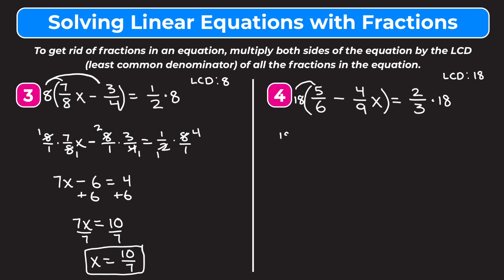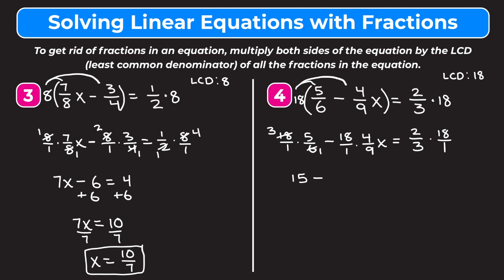On the left we're going to distribute: 18 over 1 times 5 over 6, and then subtract 18 over 1 times 4/9x. On the right this equals 2/3 times 18 over 1. Now we cross-reduce. For 18 over 1 times 5 over 6, we divide 18 and 6 by 6: 18 divided by 6 is 3, 6 divided by 6 is 1, so 3 times 5 is 15. We subtract 18 over 1 times 4/9x: we cross-reduce 18 and 9 by dividing by 9: 18 divided by 9 is 2, so 2 times 4 is 8x. On the right, 2/3 times 18 over 1: cross-reduce 18 and 3 by dividing by 3: 18 divided by 3 is 6, so 2 times 6 is 12.